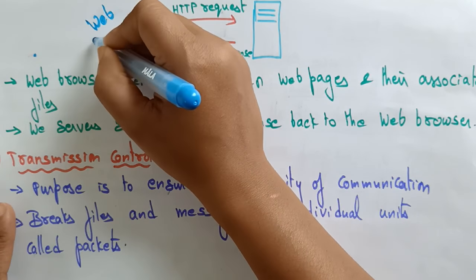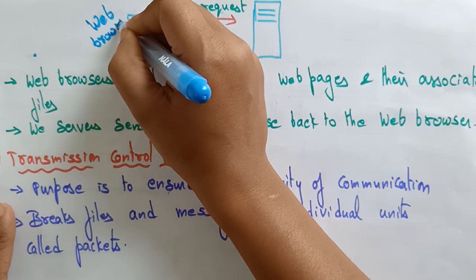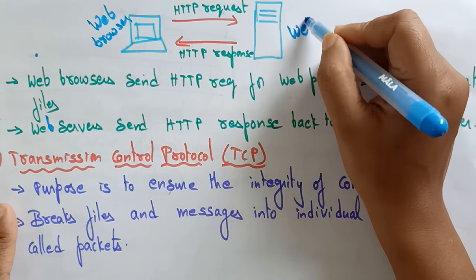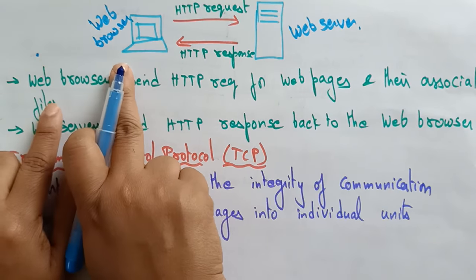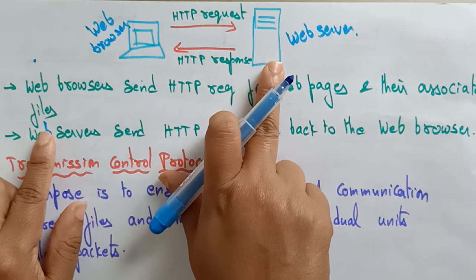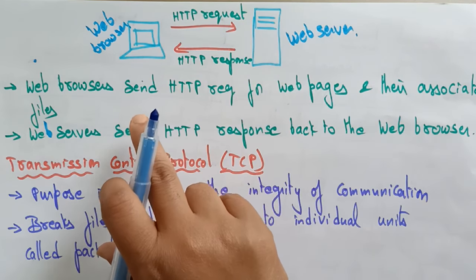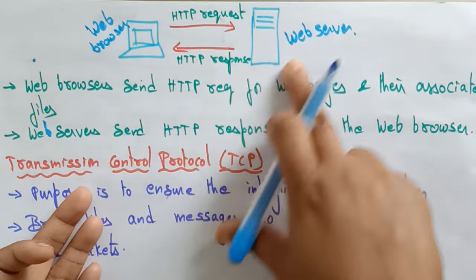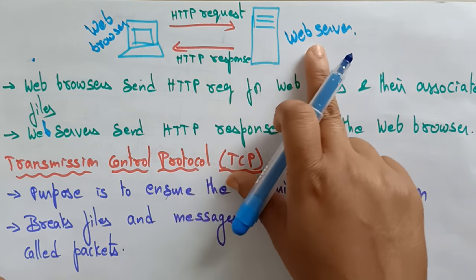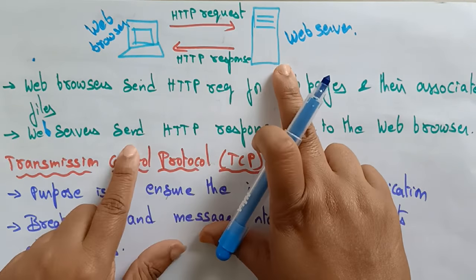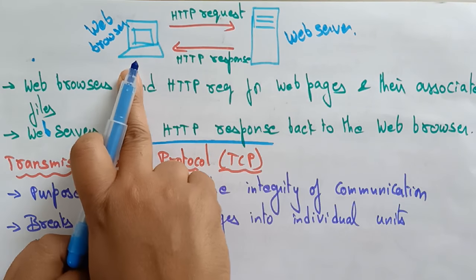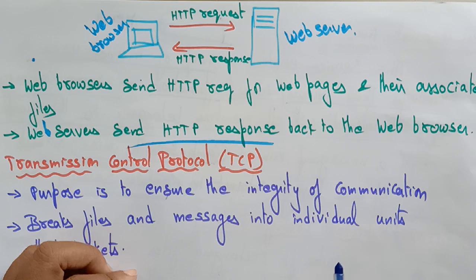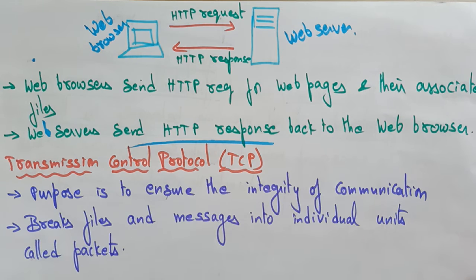The web browser on your local computer sends an HTTP request — for example, to access www.google.com. The web browser sends the request to the server to access that page and its associated files, and then the web server sends the HTTP response back to the web browser. With HTTP you can request web pages present on the web server.